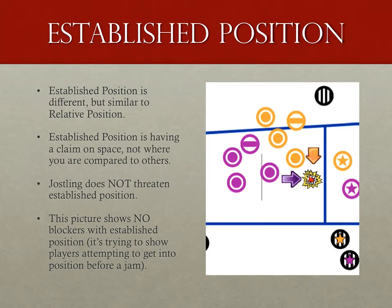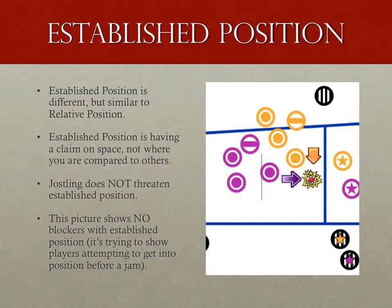The second thing I wanted to touch on briefly is the concept of established position. Most of the time, established position comes into play during the time before a jam starts, when players are trying to get into position and possibly to take someone else's position. You could almost say that in these situations someone has laid claim to their space on the track. They're stationary, or in the case of a jam in progress, they may be skating forward but aren't making any changes in speed or direction, and will remain in that place unless they decide to move or someone forces them to move.